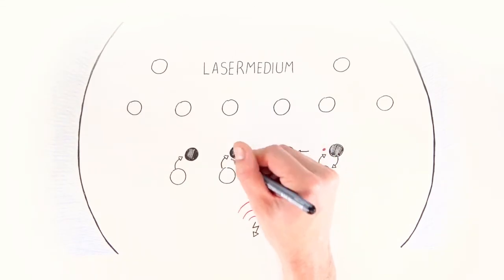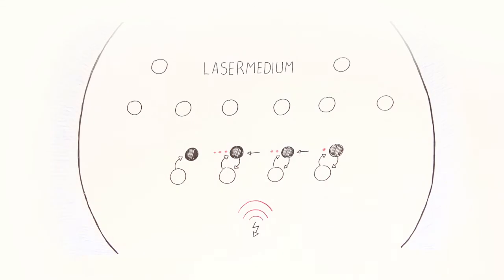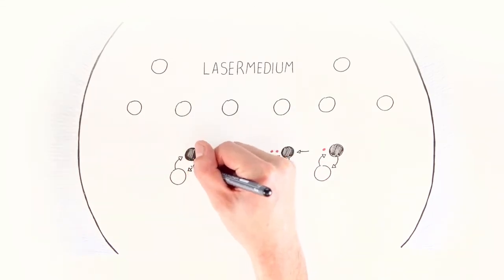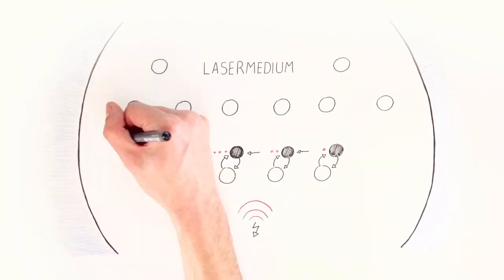If these photons hit other excited particles, then further photons are released, and so on. A sort of photon avalanche is triggered.